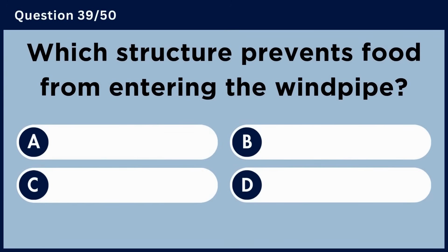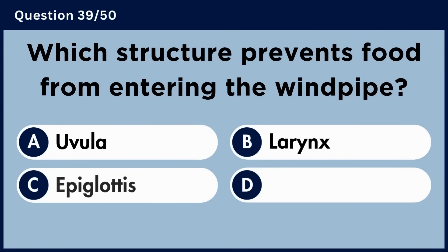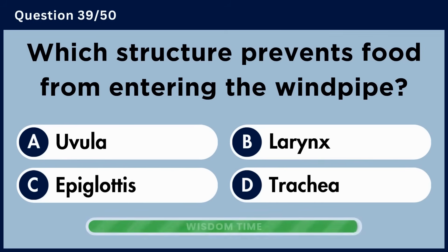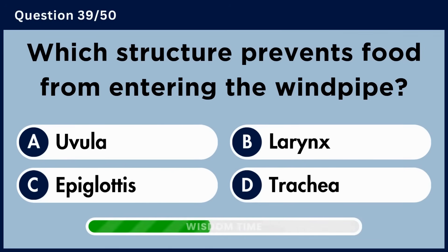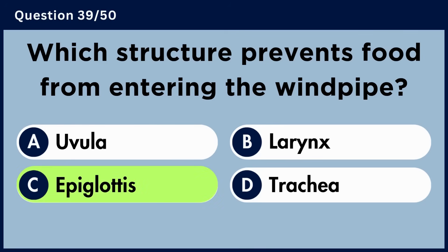Which structure prevents food from entering the windpipe? Answer C: Epiglottis.